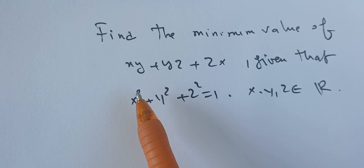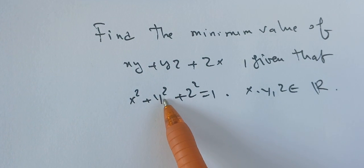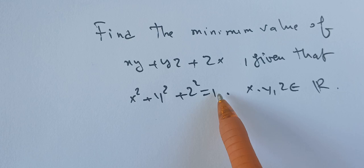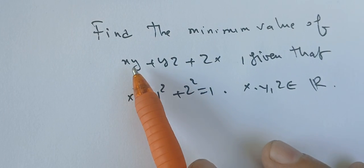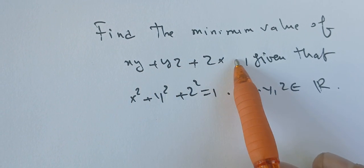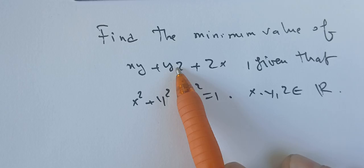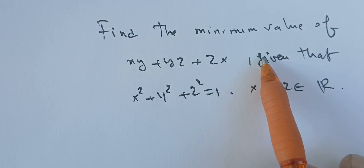We can profit from this condition here. x²+y²+z²=1 and we see that xy+yz+zx is coming from (x+y+z)².